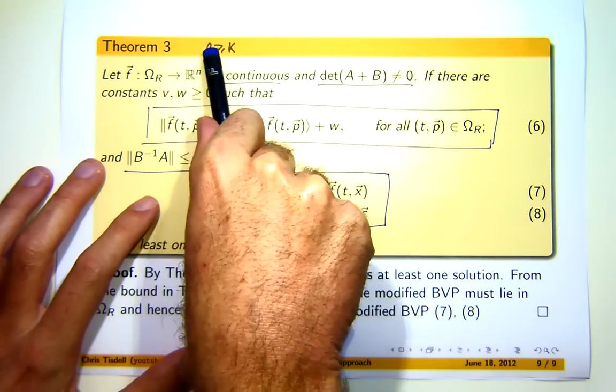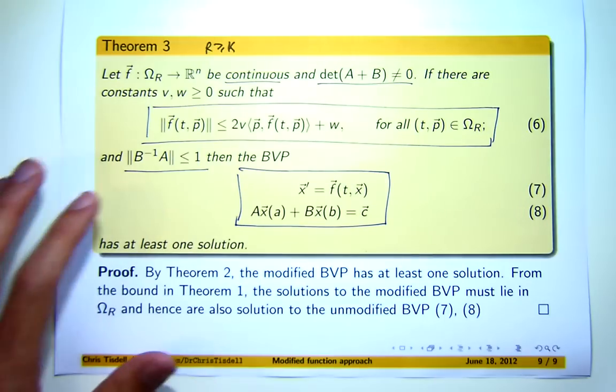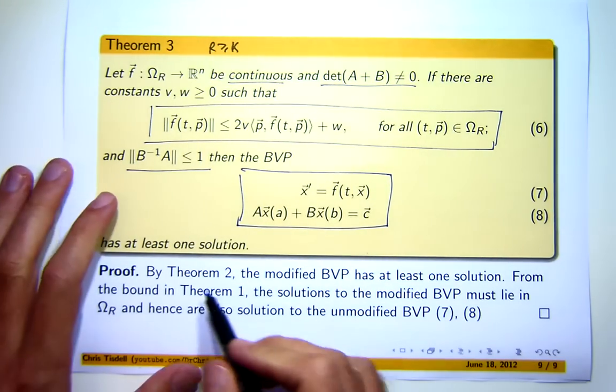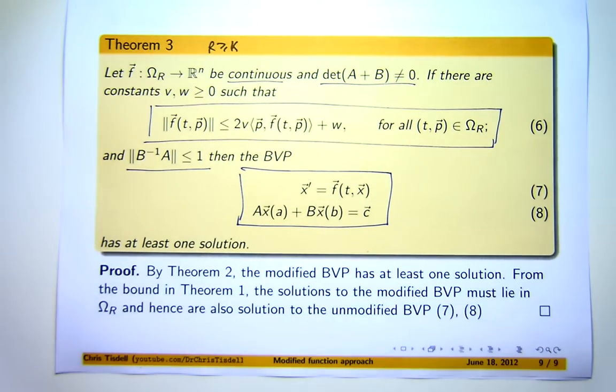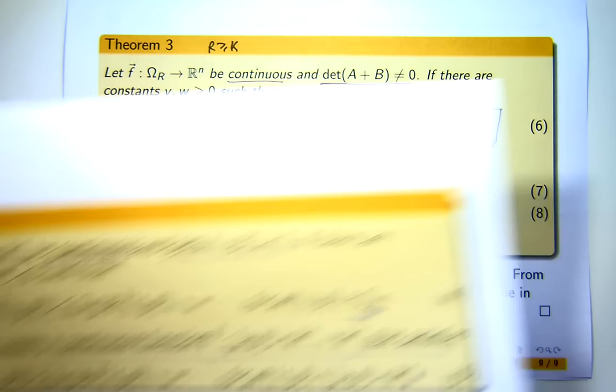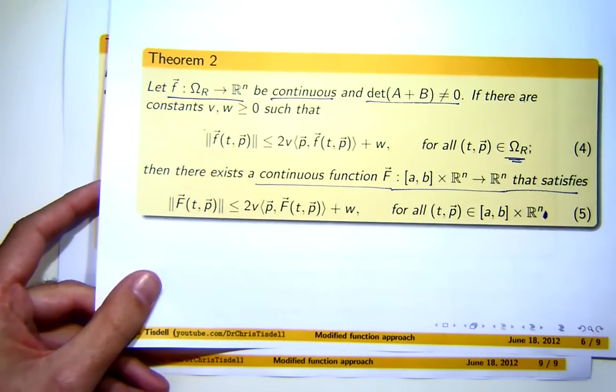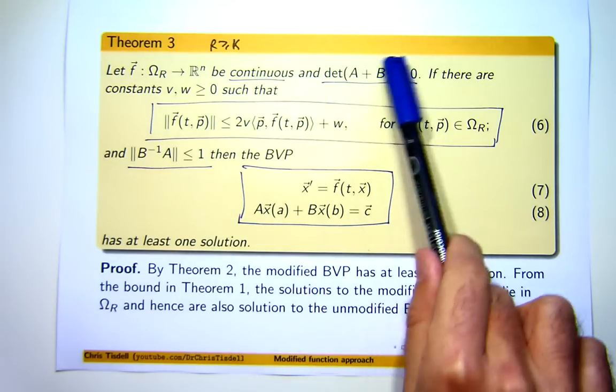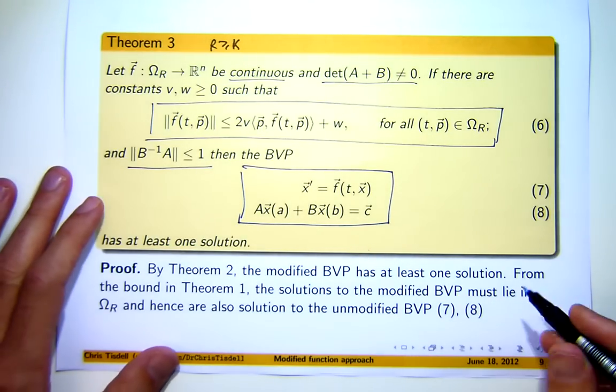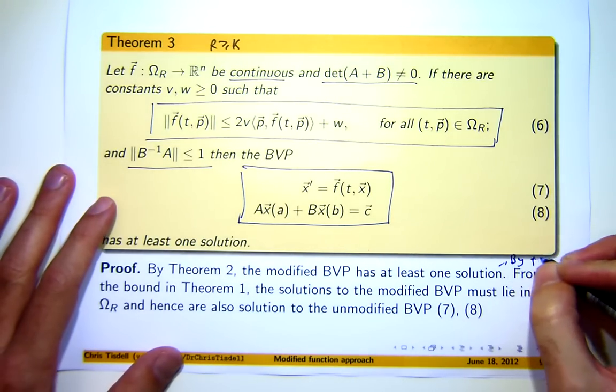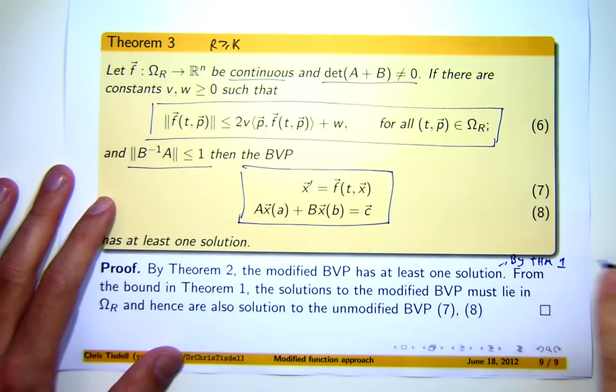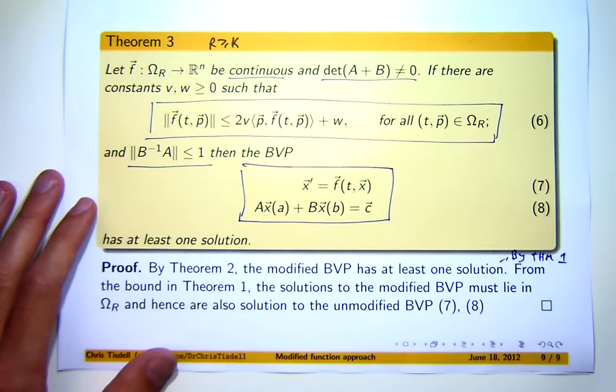Now, remember throughout we're assuming that R here in the omega sub R is always greater than or equal to K. Well, we know that the big F is continuous and it satisfies an inequality, an inequality like this on the whole set. Now, bringing in these conditions as well, we actually see that by theorem 1 the modified boundary value problem has at least one solution.